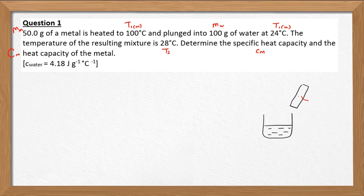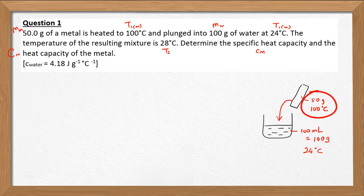For this simple diagram, the metal is 50 grams with initial temperature 100 degrees Celsius. It is transferred into water, which is 100 milliliters — also the same as 100 grams, since density equals 1 gram per milliliter. The water has an initial temperature of 24 degrees Celsius. Heat will be released from the metal, so its 100°C will decrease, and the heat will be absorbed by the water, whose temperature will increase until the final temperature of 28 degrees Celsius.